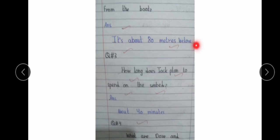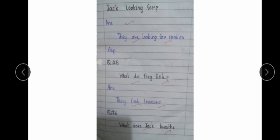How long does Jack plan to spend on the seabed? You can see that Jack J is capital. What are Dave and Jack looking for on the echo screen? They are looking for a sunken ship. What did they find? They found treasure.